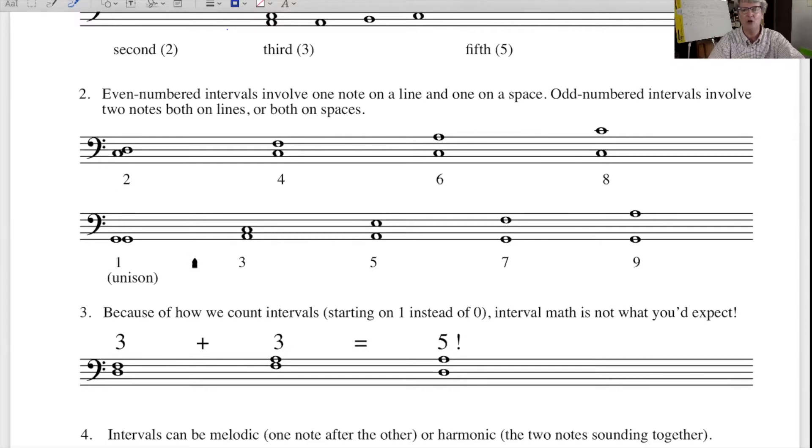Odd numbered intervals involve two notes on a line or two notes on a space. The unison, or interval number one, is the same note. We have a third, a fifth, and you can see that the fifth, these two notes are on spaces, and there's one empty space in between.